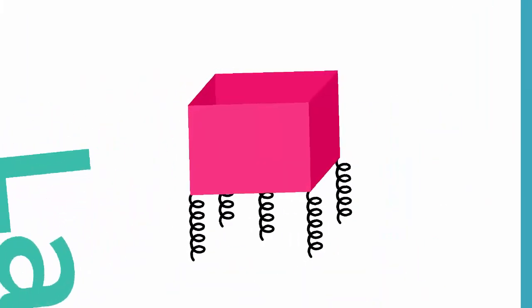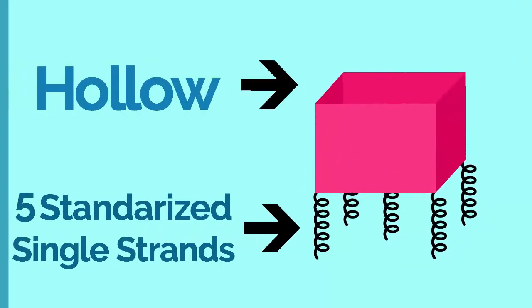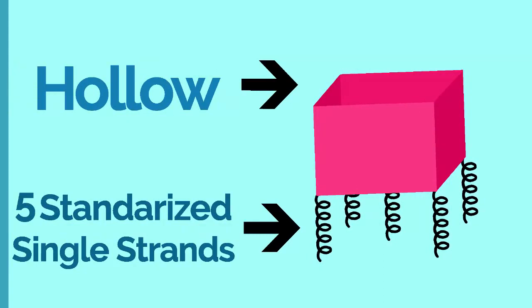La Caja is a box shape without the top cover and it is hollow. It has five standardized single strands overhanging from its base. To give it its magnetic properties, we decided to use an iron oxide magnetic nanoparticle.